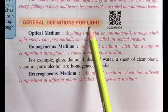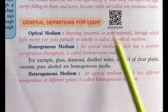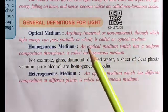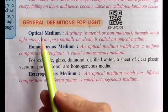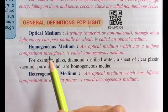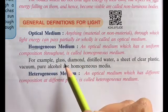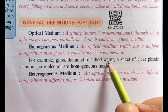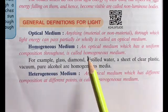Next thing we will include is general definitions for light. First one is optical medium. Any material or non-material through which light energy can pass partially or wholly is called the optical medium. Such objects or bodies through which light can easily pass are optical medium. Homogeneous medium is an optical medium which has same or uniform composition throughout the medium. Like glass, diamond, distilled water - water also has the same composition throughout. Pure alcohol - these are all homogeneous, having the same composition throughout.